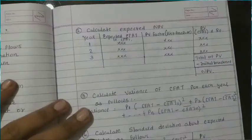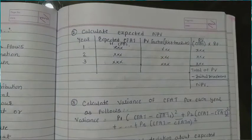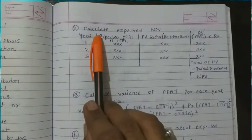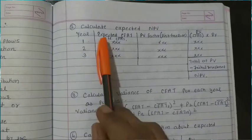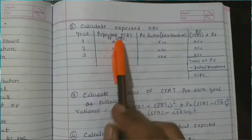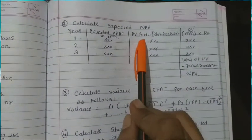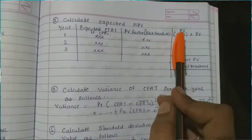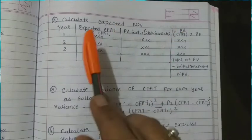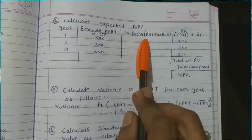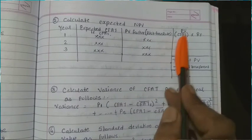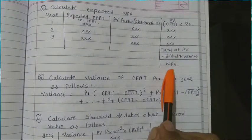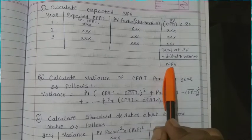At the second stage, we calculate the expected NPV. To calculate the expected NPV, the year-wise expected CFAT calculated in step one is multiplied by the present value factor using the risk-free rate, giving the present value. Then the total of present values minus the initial investment gives us the expected NPV.